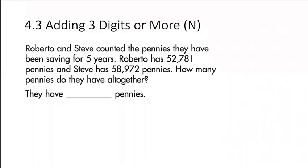Adding three digits or more. Roberto and Steve counted the pennies they have been saving for five years. Roberto has 52,781 pennies, and Steve has 58,972 pennies. How many pennies do they have altogether?